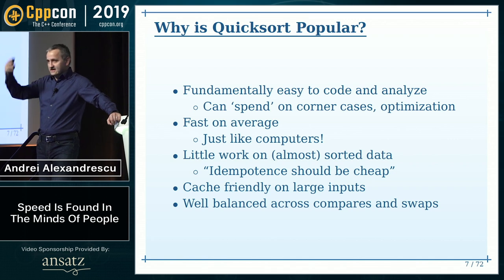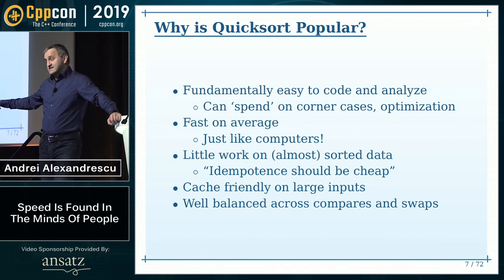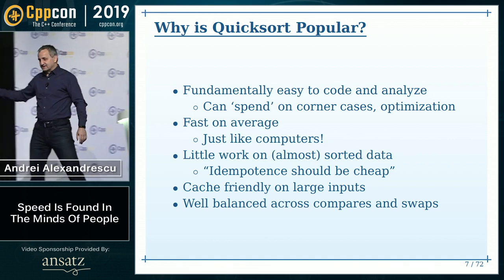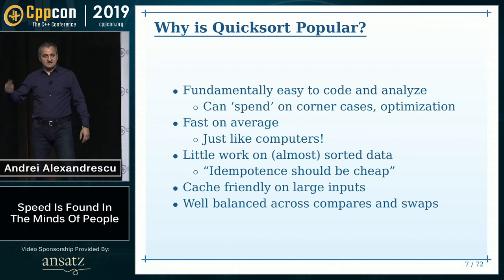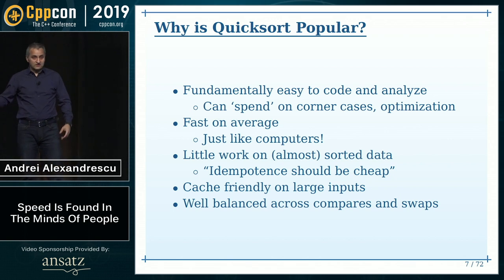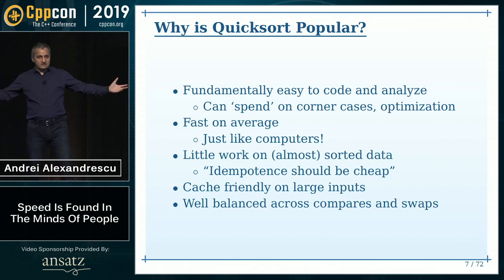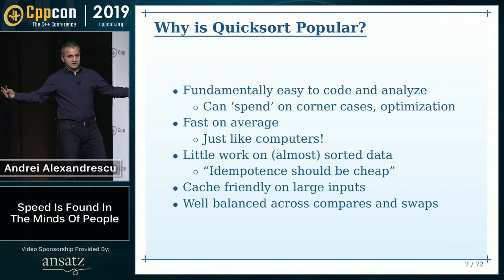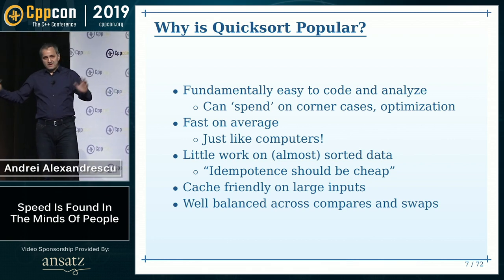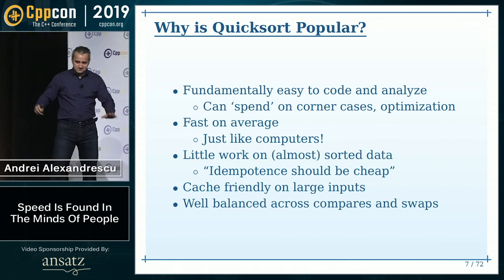Quicksort is easier to analyze than Heapsort, which is a simpler algorithm. The math is not difficult. Heapsort is absolutely crazy to analyze — the latest and greatest had to use mathematical software because the formula is more difficult than Einstein's general relativity. Maybe I'm exaggerating just a bit.